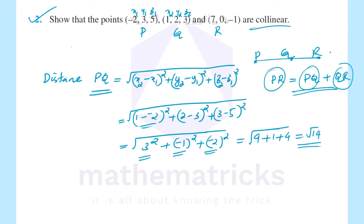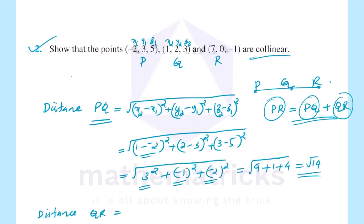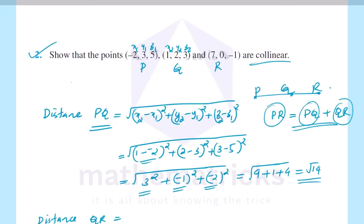Now PQ equals root 14. Next find QR and PR. Distance QR: x1, y1, z1 is (1, 2, 3) and x2, y2, z2 is (7, 0, -1).